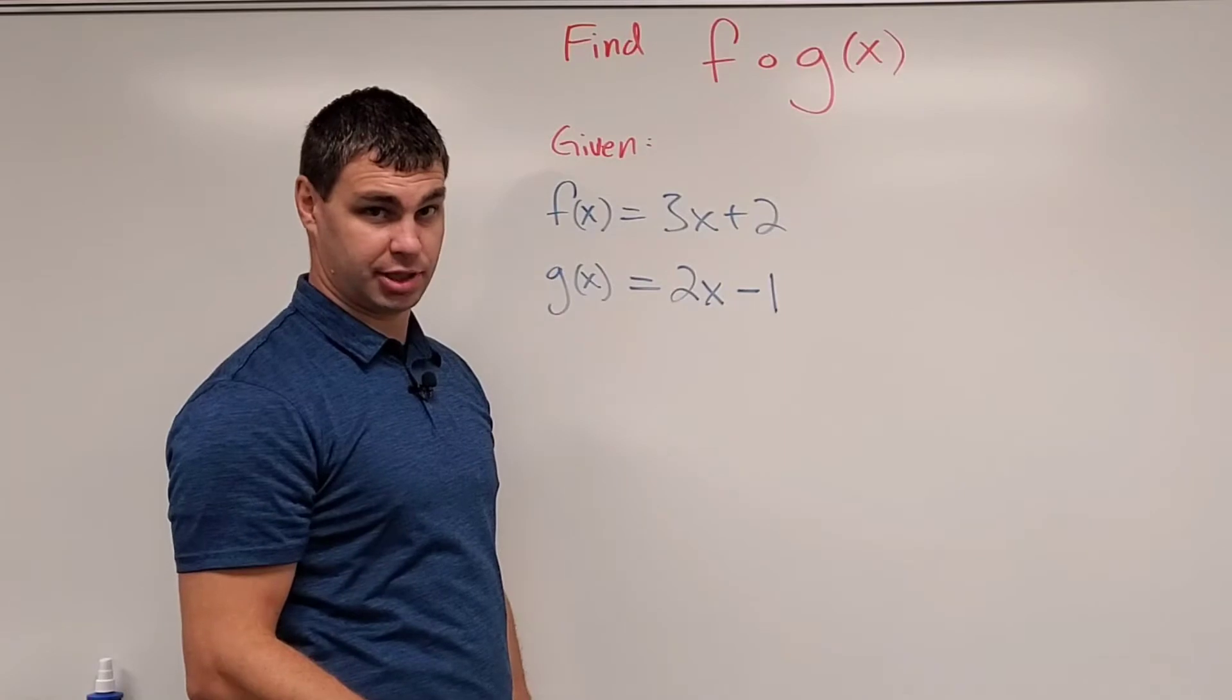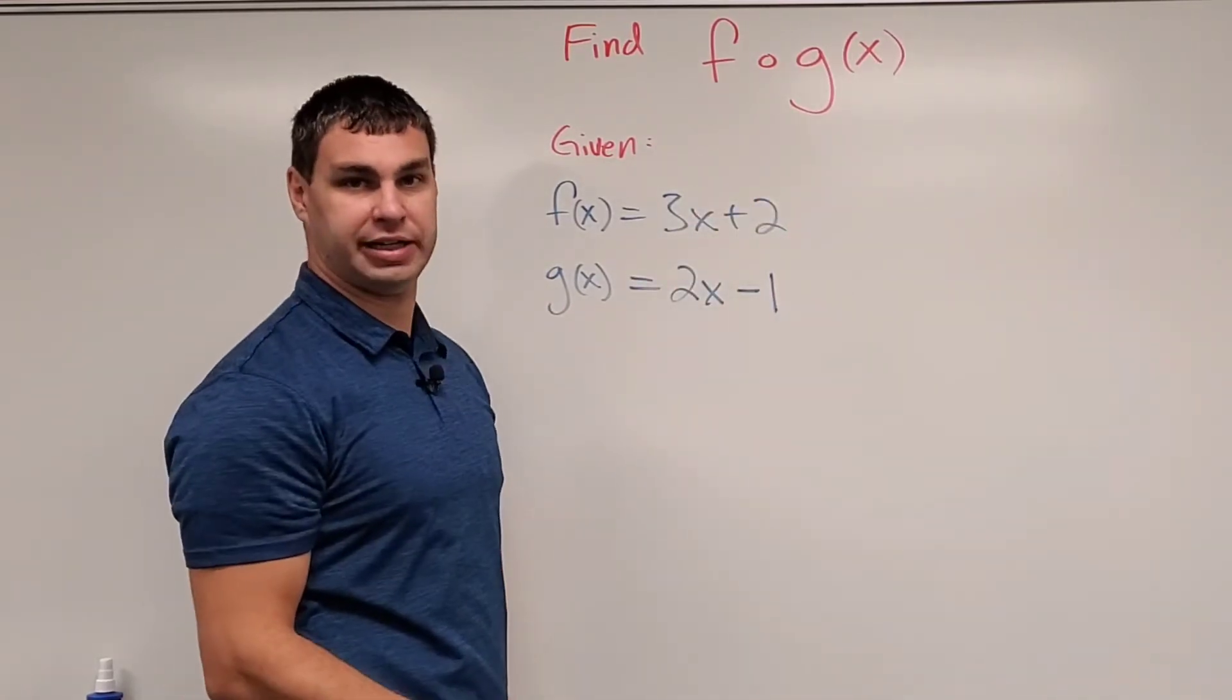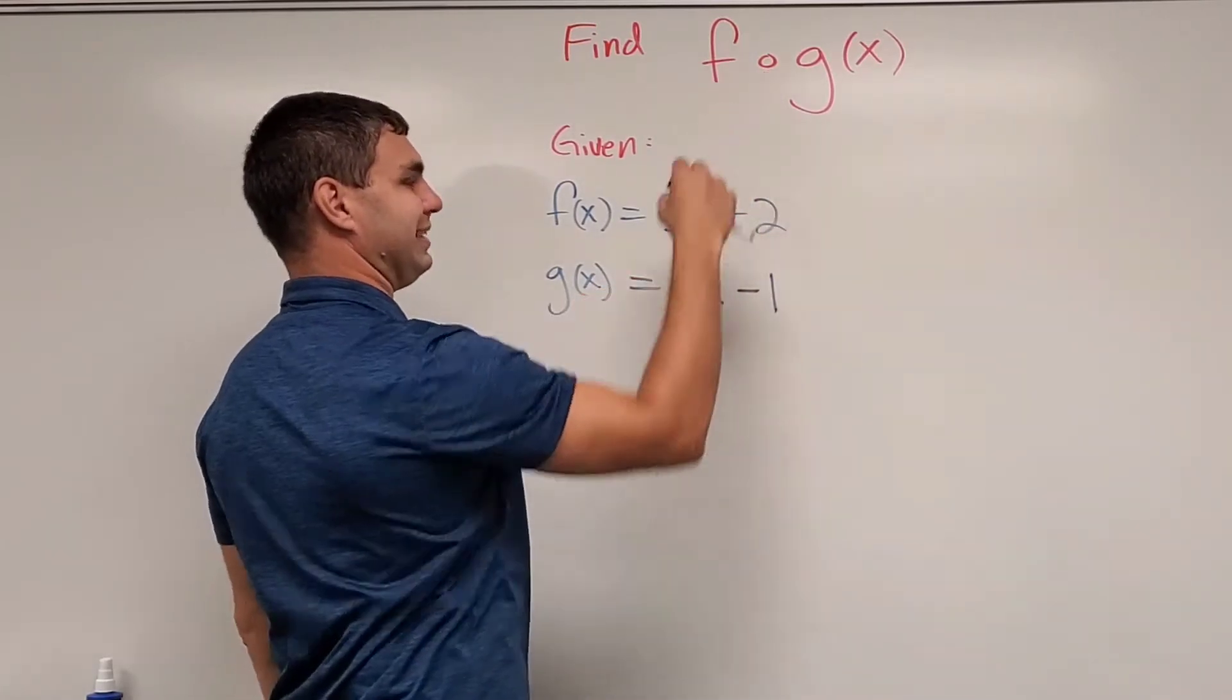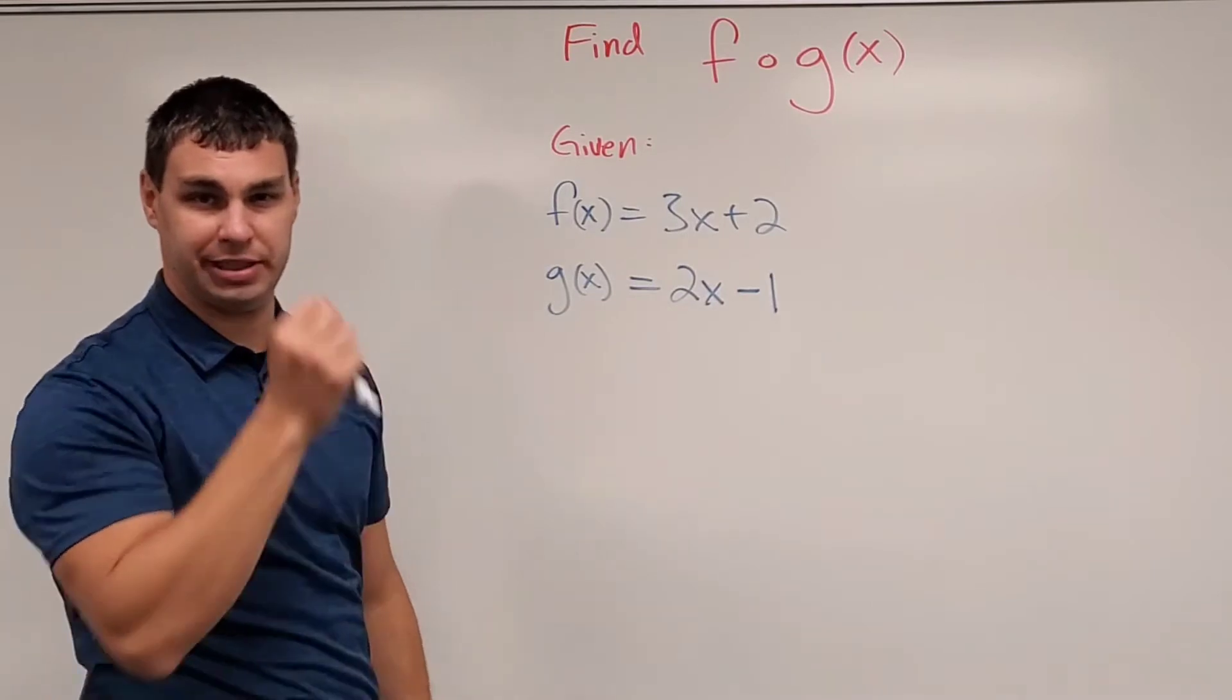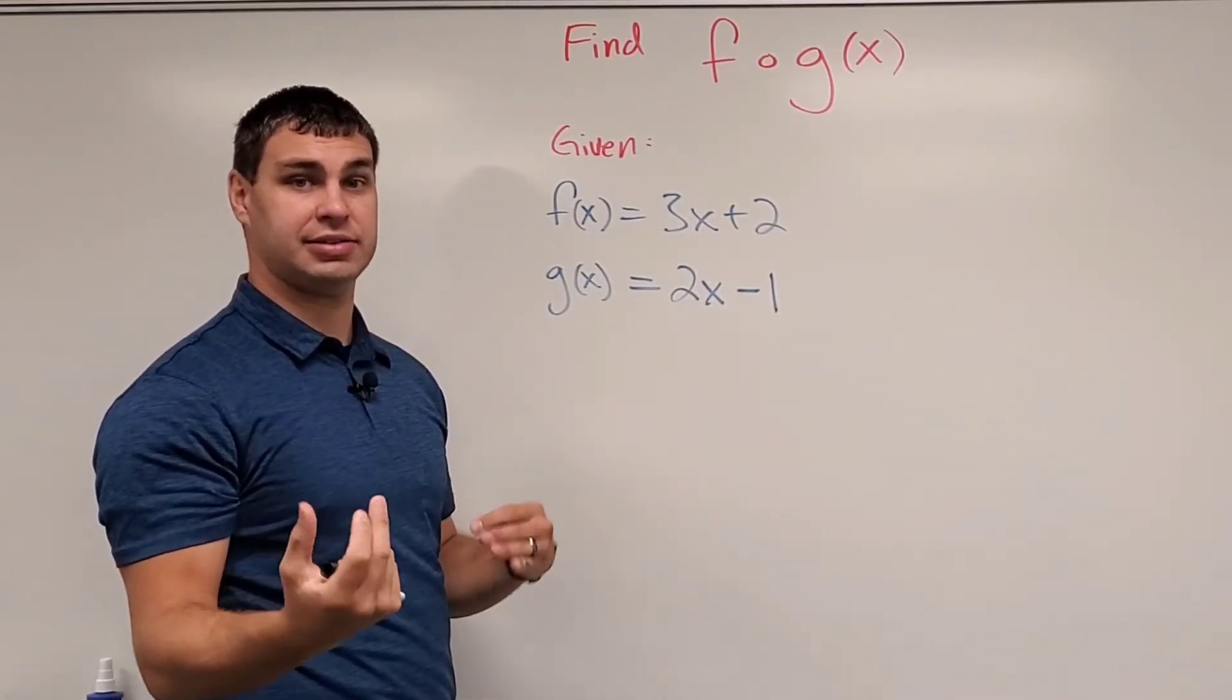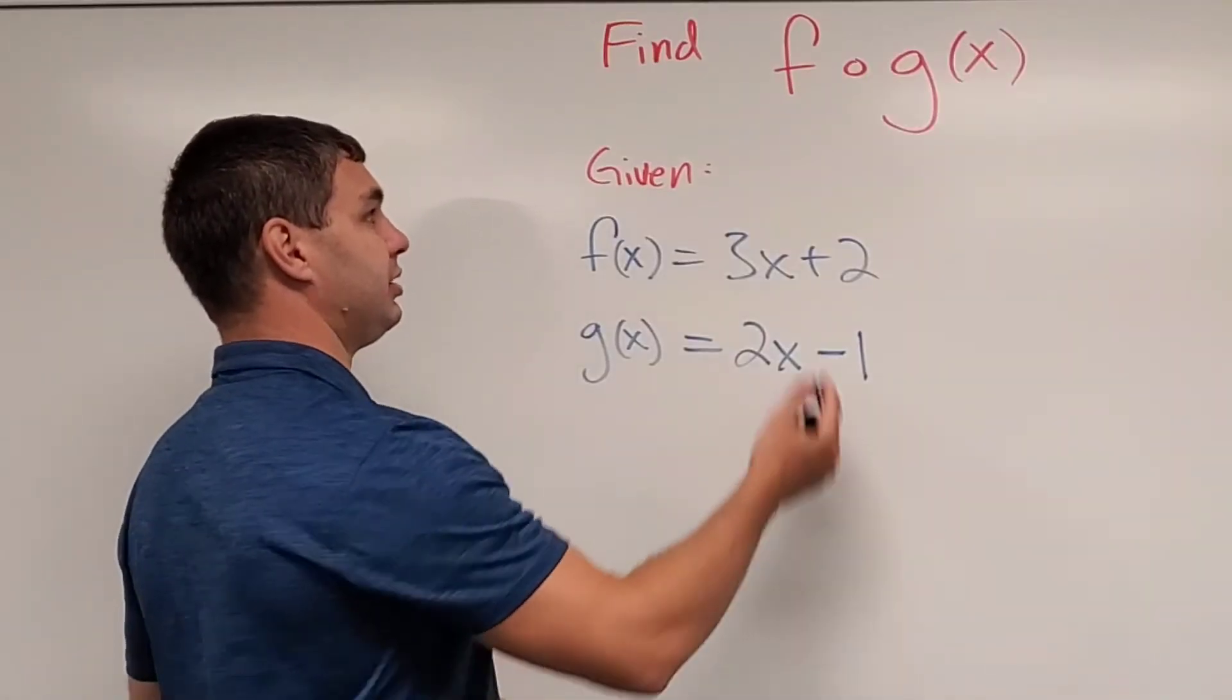It's a little bit interesting. This is not 'fog' of x. If you do it backwards, it's not 'golf.' This little circle is a composition, which means we're going to combine f of x and g of x. Those are two functions.